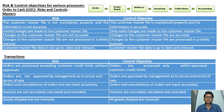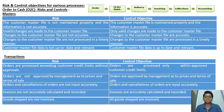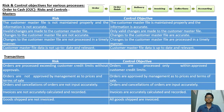Under O2C transactions, the risks and control objectives are: orders processed exceeding customer credit limits without approvals — must be within approved credit limits; orders not approved by management as to prices and terms — must be approved by management; orders and cancellations not input accurately — must be input accurately; invoices not accurately calculated and recorded — must be accurately calculated and recorded; goods shipped not invoiced — all goods shipped must be invoiced.